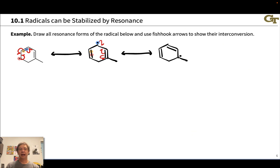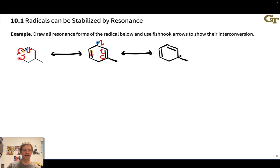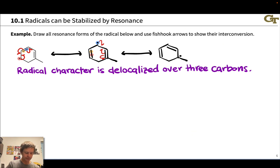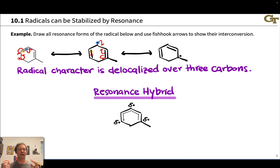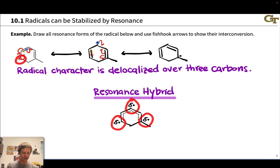We now have a new allylic radical situation in the second resonance form, so we can continue pushing electrons to generate a third resonance form with radical character at yet another position. At this point, we've generated all possible resonance forms since there's a CH₂ and CH₃ at the ends. The resonance forms show radical character delocalized over three carbons. We can draw a resonance hybrid using delta-dot notation to represent partial radical character at each of those carbons, with partial double bond character between all the linked carbons shown as bond-and-a-half type bonds.